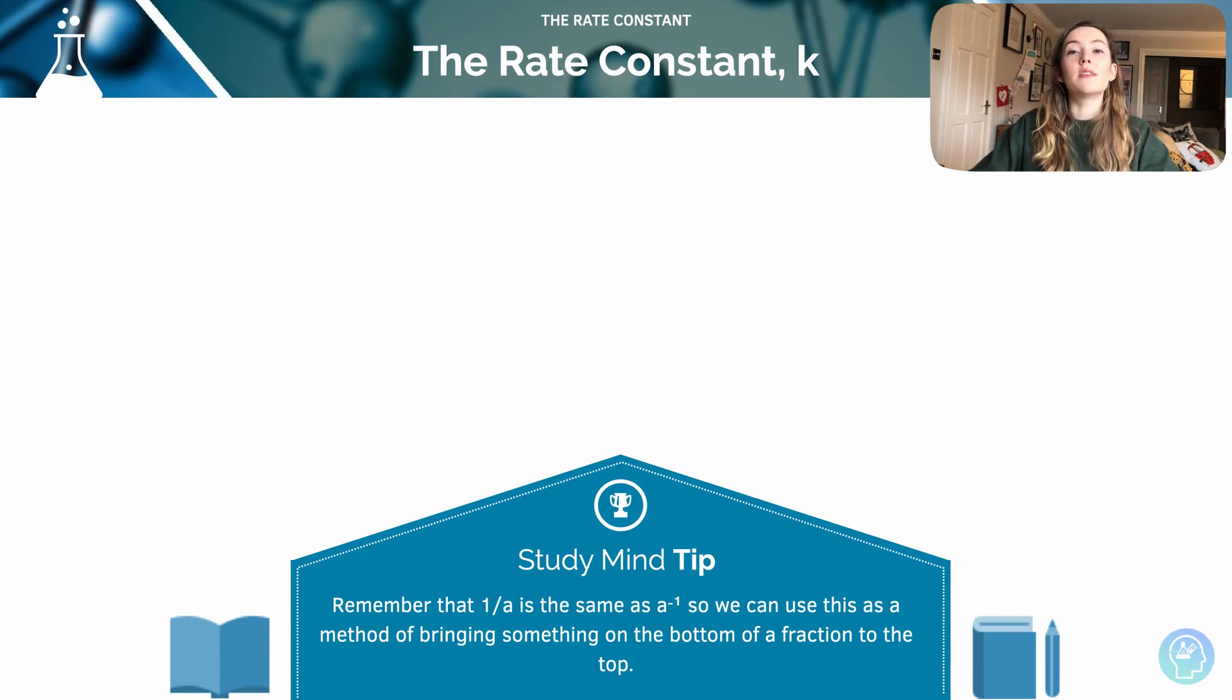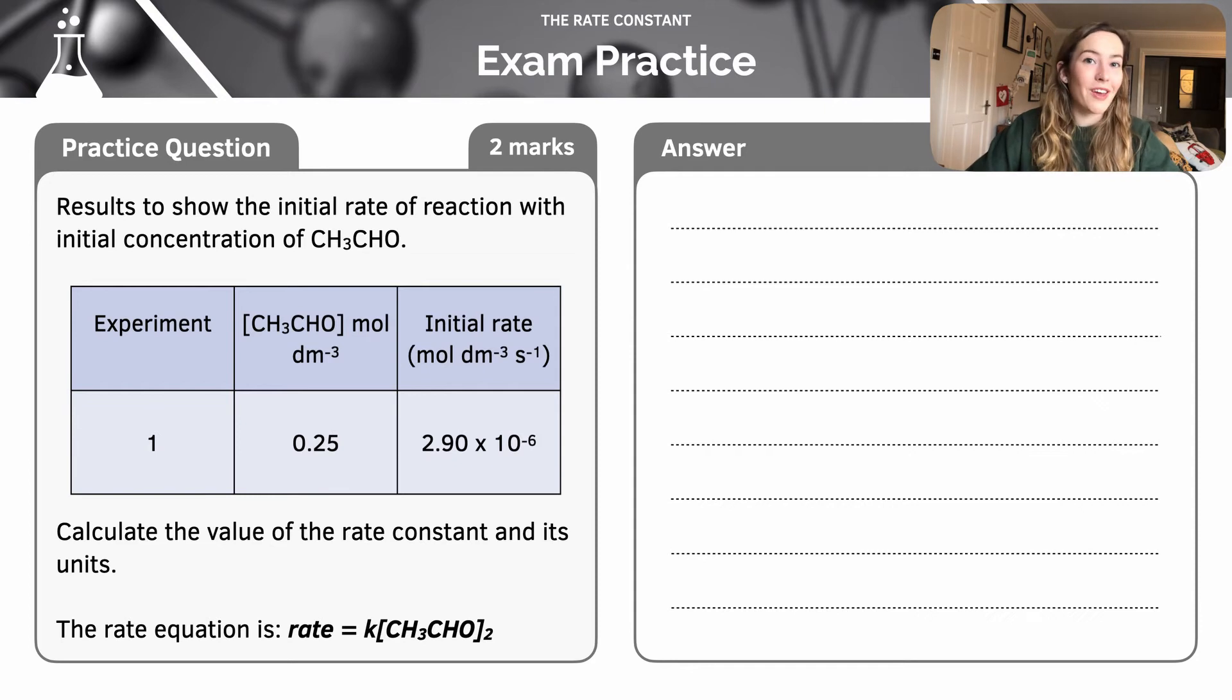Remember, 1 over A is the same as A to the minus 1, and I was using that skill in the previous question to work out the units. It's how we can bring values on a denominator of a fraction up to the top. Here's a question, so pause the video and give it a go.